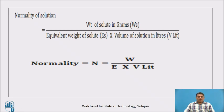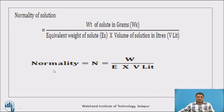How do we find the gram equivalent weight of the solute? That is the weight of solute in grams, denoted by Ws, divided by the equivalent weight of solute Es, multiplied by the volume of solution in litres V. So normality N equals W upon E multiplied by V in litres, where W is weight of the solute in grams, E is equivalent weight of the solute, and V is volume in litres.